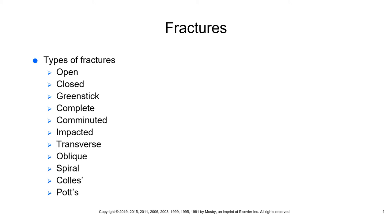Secondary management for closed fractures involves replacing bone fragments into their correct position through one of four ways. The first is closed reduction — aligning the bone without surgery, using manual manipulation. The second is traction, used to straighten bones or relieve pressure, whether for a femoral fracture or a spinal fracture. There are two types: skin traction and skeletal traction.